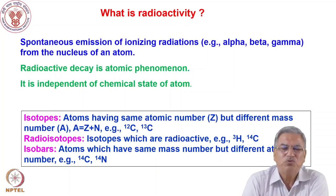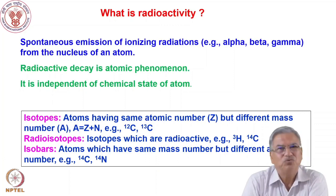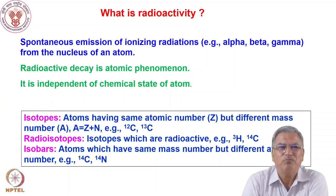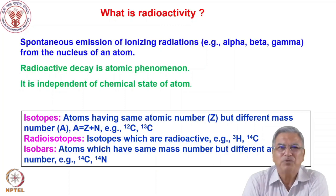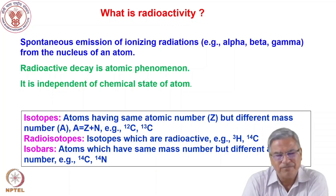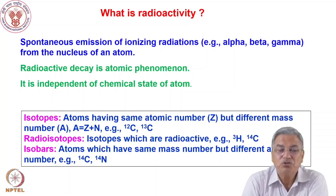Whether you take a metal, whether you take an oxide, whether you take a liquid form or gaseous form, it is independent of the chemical state. For example, the parameters of radioactive decay are the half-life. The half-life is a constant of a radioisotope — it does not depend upon the chemical state.